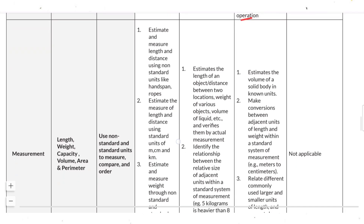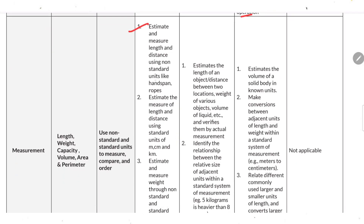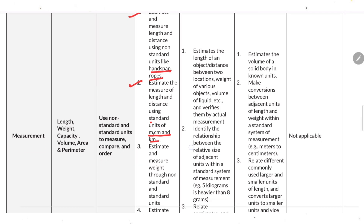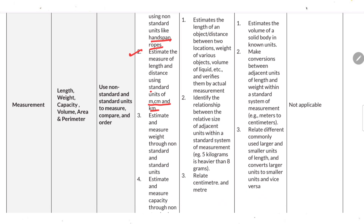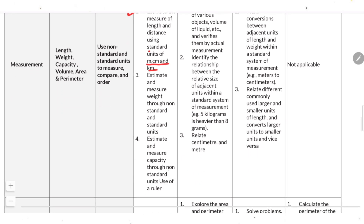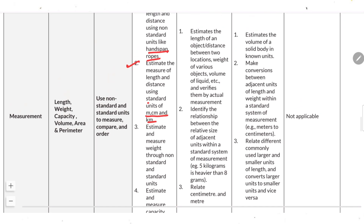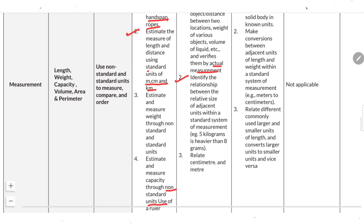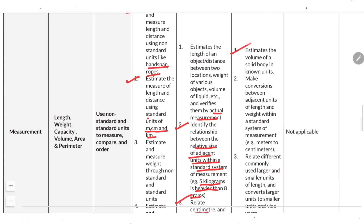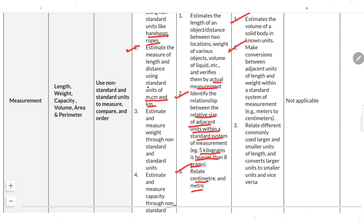For Measurement: estimate and measure length and distance using non-standard units like hand span. Estimate and measure length and distance using standard units like meter, centimeter and kilometer. Estimate and measure weight using non-standard and standard units. Estimate and measure capacity using non-standard and standard units. Estimate the length of objects, distance between two locations and weight of various objects, then verify by actual measurement. Identify the relationship between the relative size of adjacent units within a standard system, e.g., 5 kg is heavier than 8 grams; relate centimeters and meters.